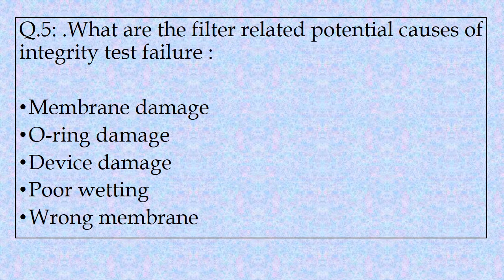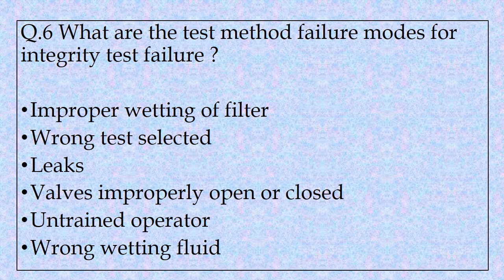Question 5: What are the filter-related potential causes of integrity test failure? Causes include: membrane damage, O-ring damage, device damage, poor wetting, wrong membrane, wrong test selected, leaks, valves improperly open or closed, untrained operator, and wrong wetting fluid used for integrity testing.